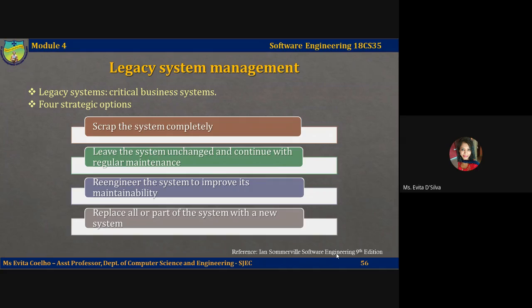The third option is to re-engineer the system to improve its maintainability. This option should be chosen when the system quality has been degraded by change and where new changes to the system are still being proposed. This process may include developing new interface components so that the original system can work with other newer systems.